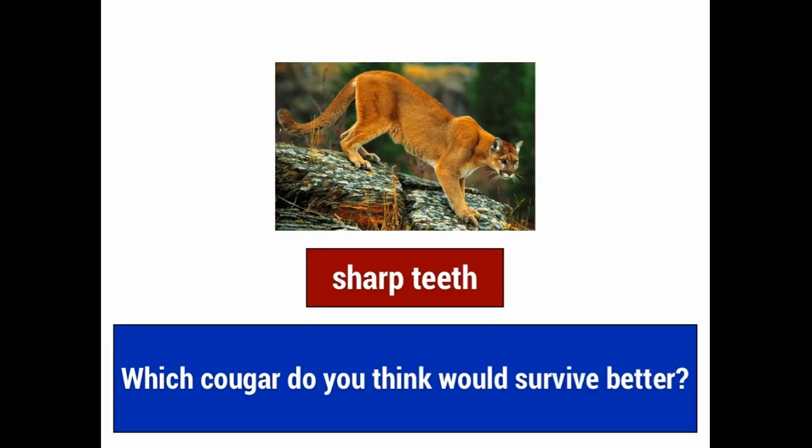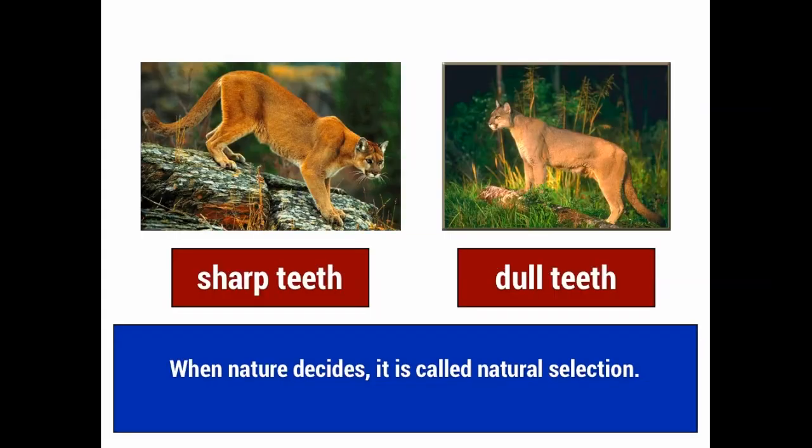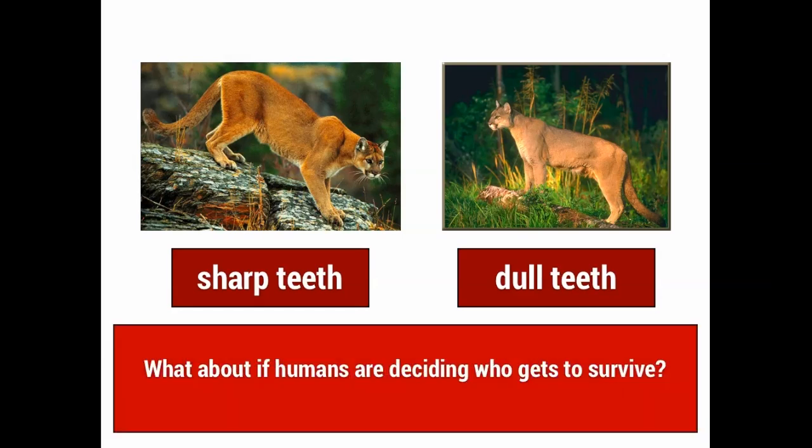It was not up to humans to decide which cougar would survive. Rather, nature decided based on the sharpness of the cougar's teeth. And when nature decides, it's called natural selection, because nature has done the deciding as to who will survive and who will die.